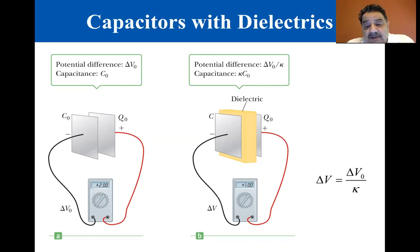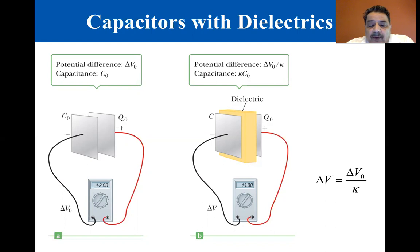If a dielectric is now inserted between the plates, as in the figure on the right, the voltage across the plates is reduced by the factor kappa. The new voltage is shown in the equation. Because kappa is greater than one, delta V is less than delta V zero, the voltage across the capacitor without the dielectric.